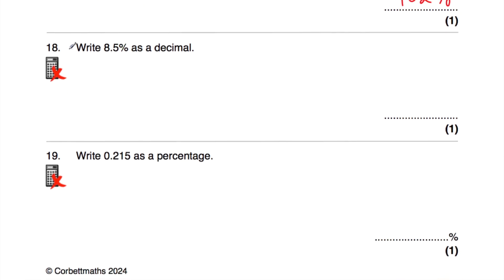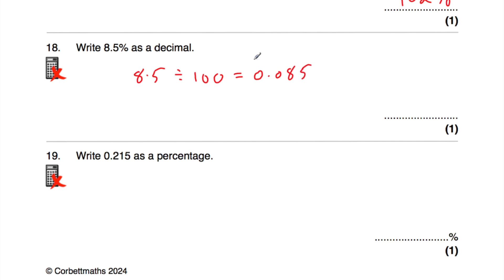Question number eighteen says write 8.5% as a decimal. Take 8.5 and divide by 100, moving the digits two columns to the right. The 8 in the units moves into the tenths and then into the hundredths. The 5 moves from the tenths into the hundredths and then into the thousandths. So placing zeros as placeholders, the answer is 0.085. That makes sense because 8% is 0.08, so 8.5% would be 0.085.